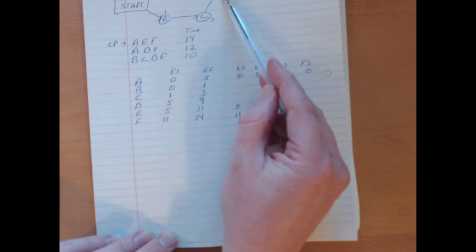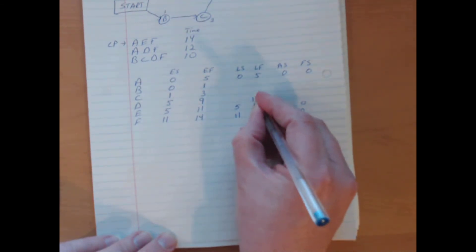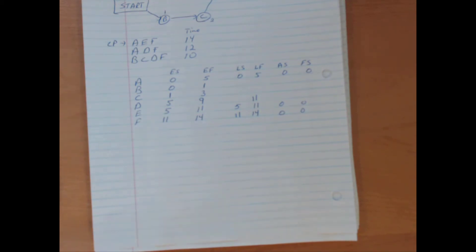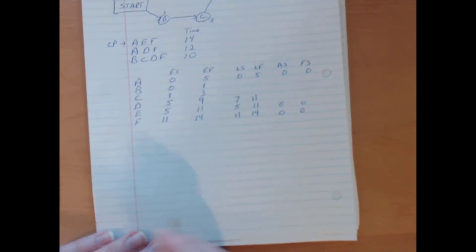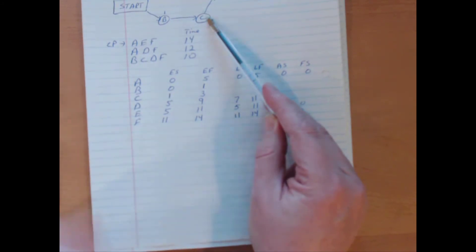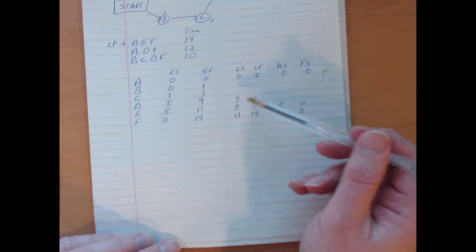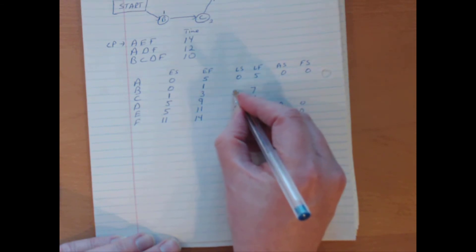So activity D now. What's the latest finish for activity D? Well activity D is a predecessor activity to activity F. So F cannot begin later than period 11, which means that D cannot finish any later than period 11. Otherwise, it will impact when period F can begin and then delay the whole project. Working backwards, D takes 4 periods or 4 months. 11 minus 4 is 7. Same kind of thinking with C. We have to start to think of for C, what's the latest finish time for C? Well, D depends on C, or C is a predecessor activity to D. And D can't start, or can't finish any later than period 7. So C must be done by period 7. Otherwise, there's trouble. Minus the 2. And C's latest start is period 5.